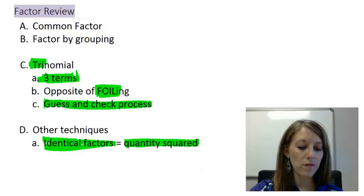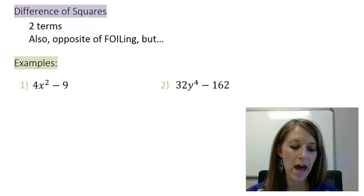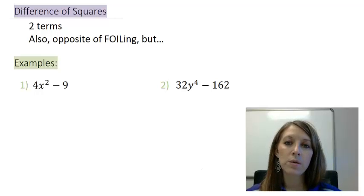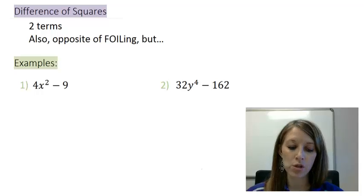So now that we've reviewed what we've learned so far, let's see what other techniques we have left. The next one that I want to focus on is a difference of squares. And we know it's going to be a difference of squares because it's going to have two terms in it. Again, more or less, we know that this factoring method is not going to work.